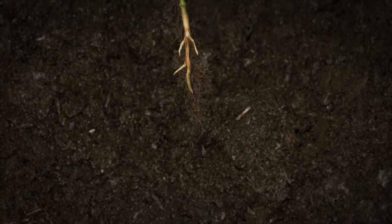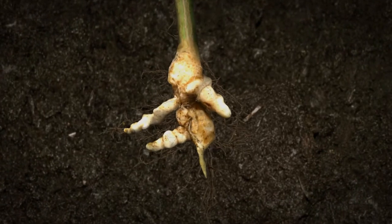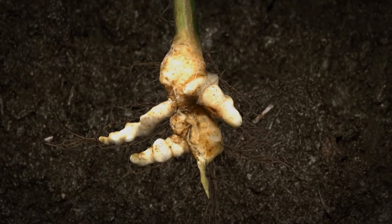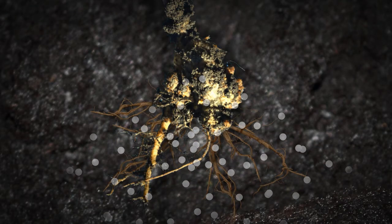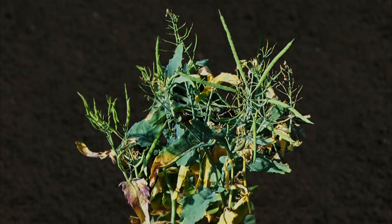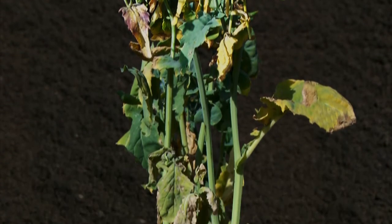Growth of infected roots is disrupted, resulting in distinctive club symptoms on plant roots. Water and nutrient uptake is restricted by clubbed roots and can result in reduced seed production, stunting and premature death of the plant.